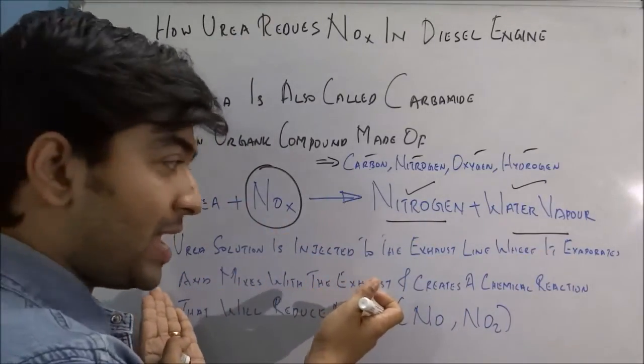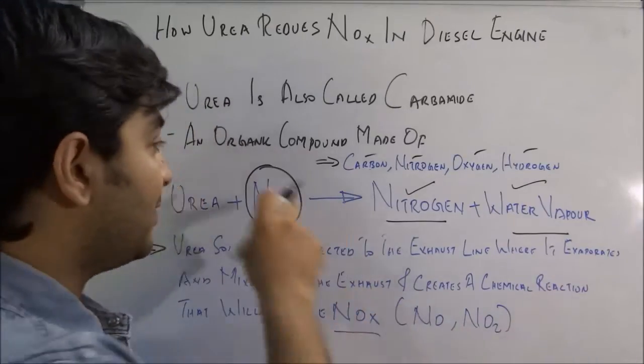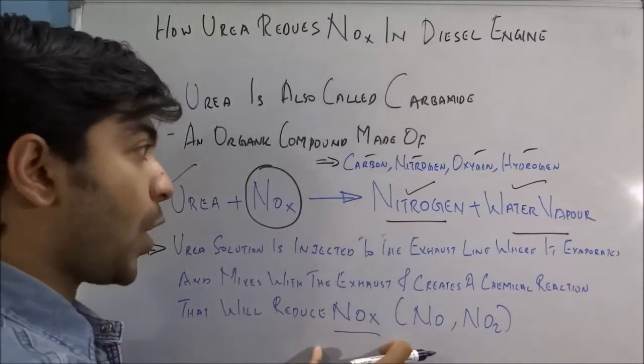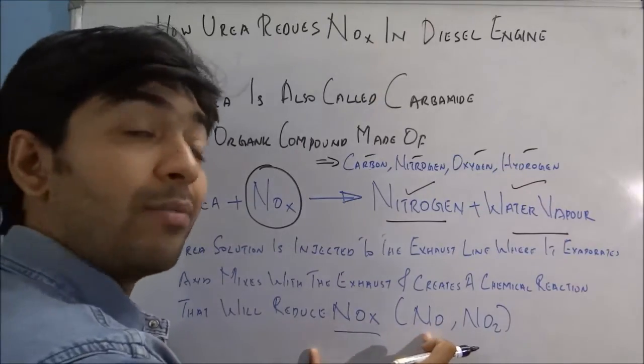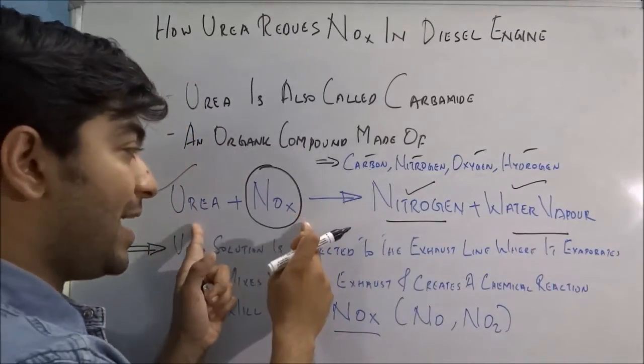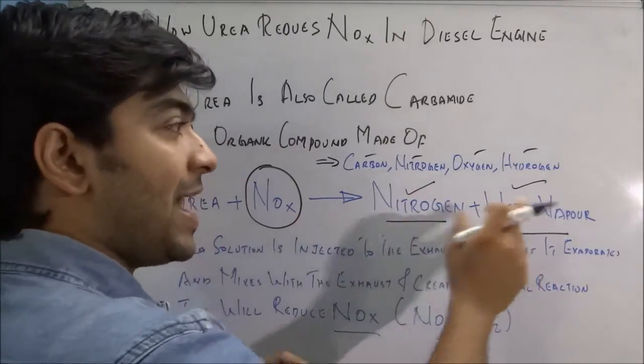And there it creates this particular chemical reaction as shown over here, and that will reduce the NOx—nitrogen monoxide or nitrogen dioxide. In this manner, urea plus nitrogen oxide gives nitrogen and water vapor.